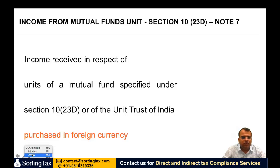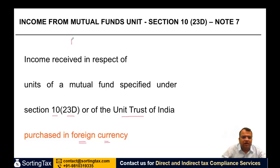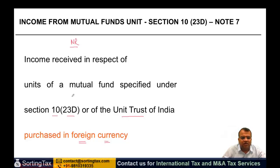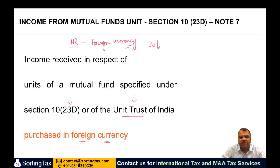Income from mutual fund units — income received in respect of units of a mutual fund specified under Section 10(23D) or units of UTI purchased in foreign currency — if a non-resident has this income and the units were purchased in foreign currency, then income received in foreign currency will be taxed at 20%.